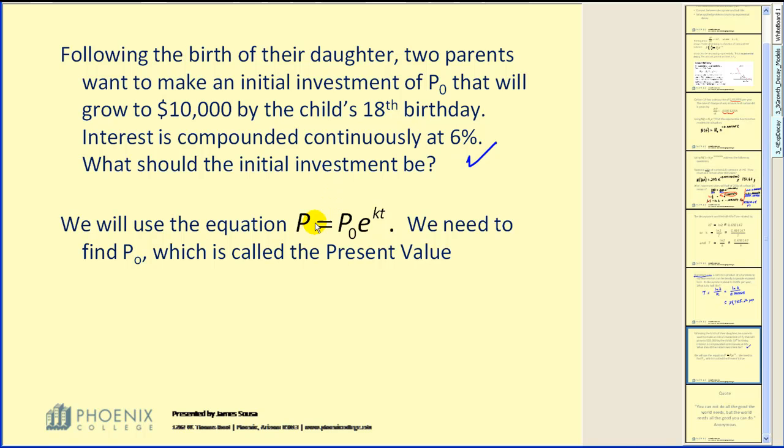We will use the equation P equals P₀ times e to the power of kt. We need to find P₀, which is called the present value.